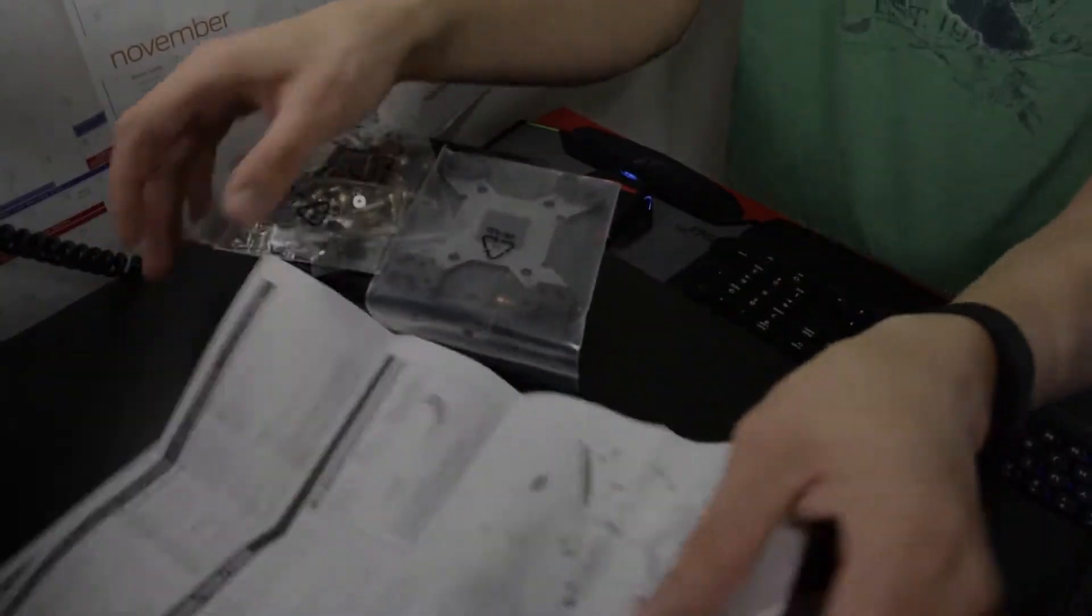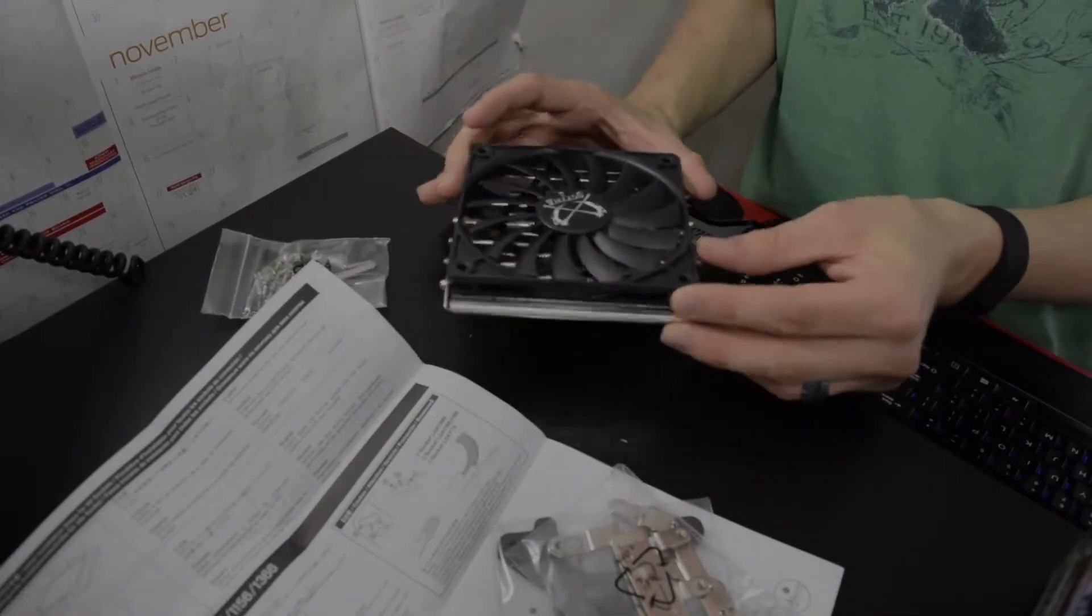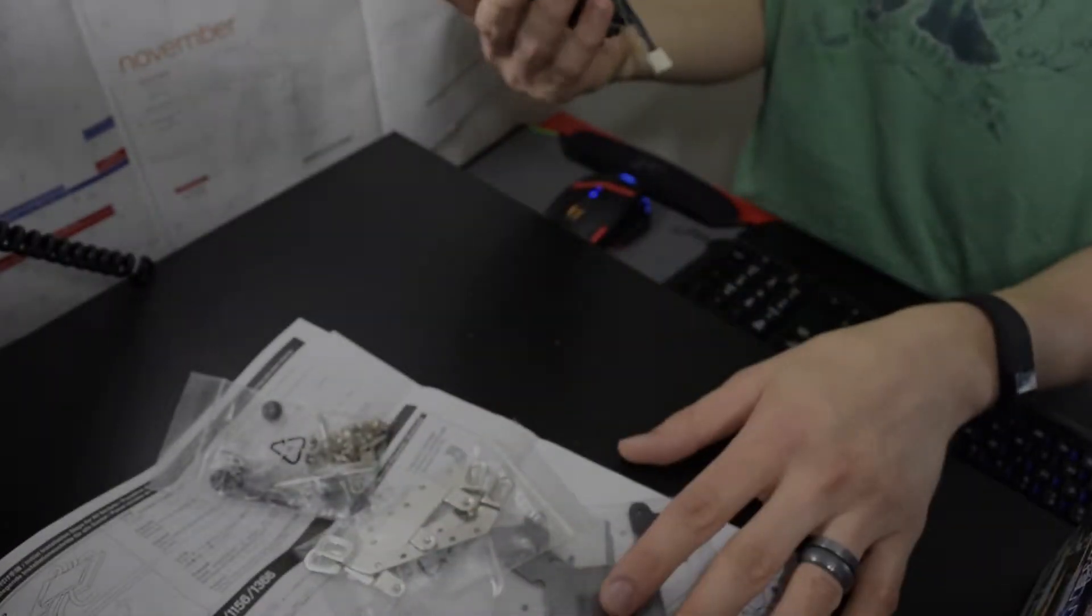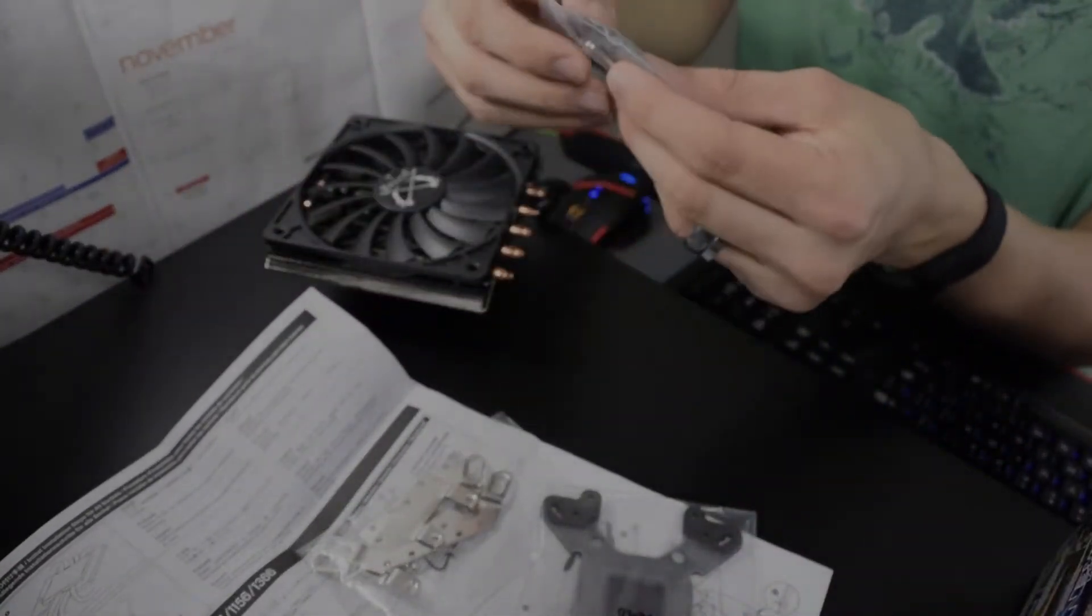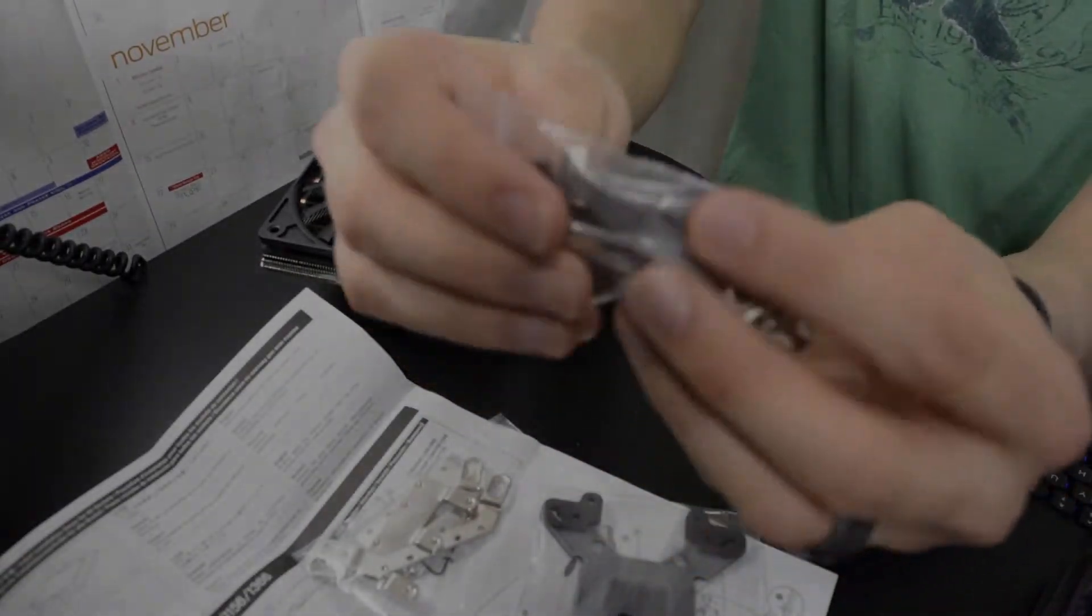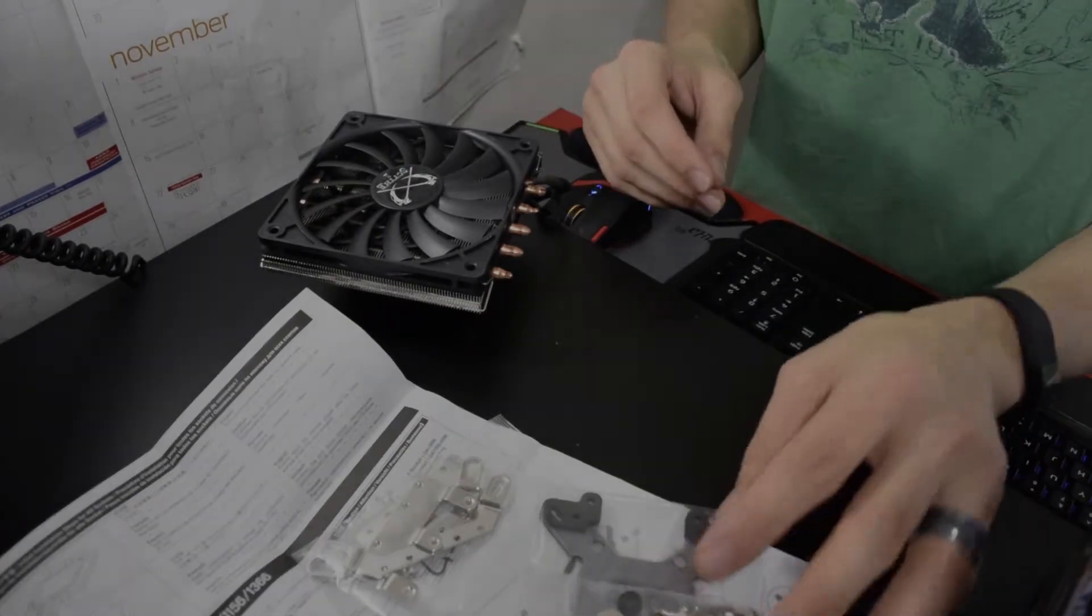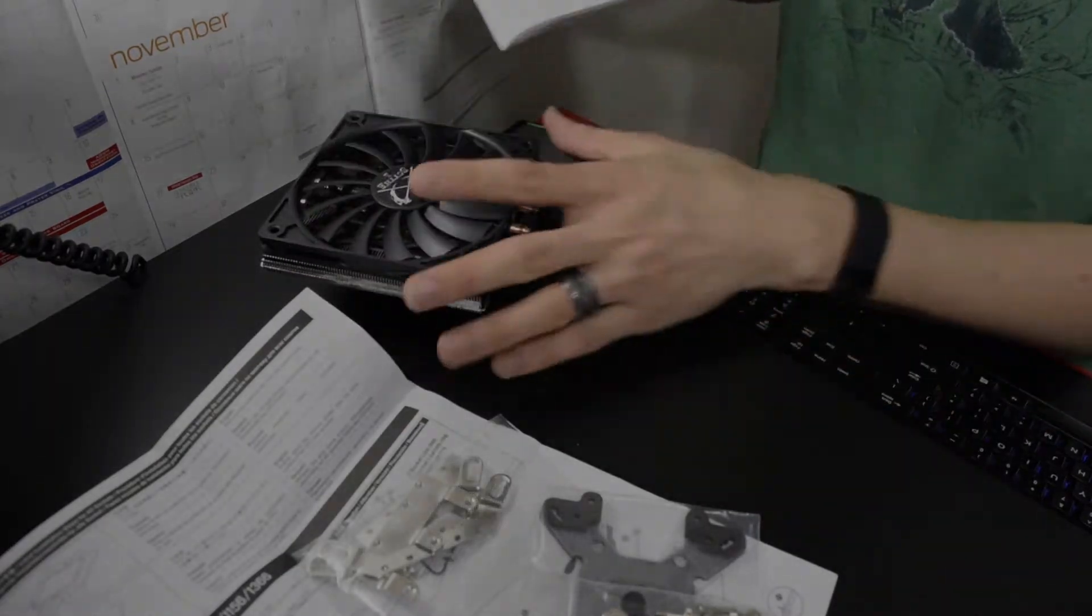So yeah, you have the CPU cooler itself, the hardware necessary to install it, and I read somewhere that it included thermal grease, which it does - right there. Yeah, that's in the bag right there as well. So it comes with the thermal grease necessary to install it on the CPU. Other than that, there's nothing else in the box.